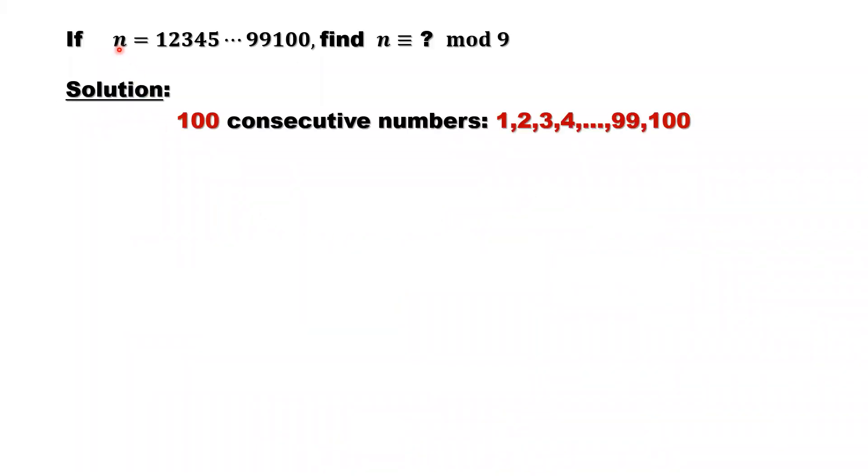This N is formed by 100 consecutive numbers, 1, 2, 3, 4, until 10, 11, 12, until 99, 100.